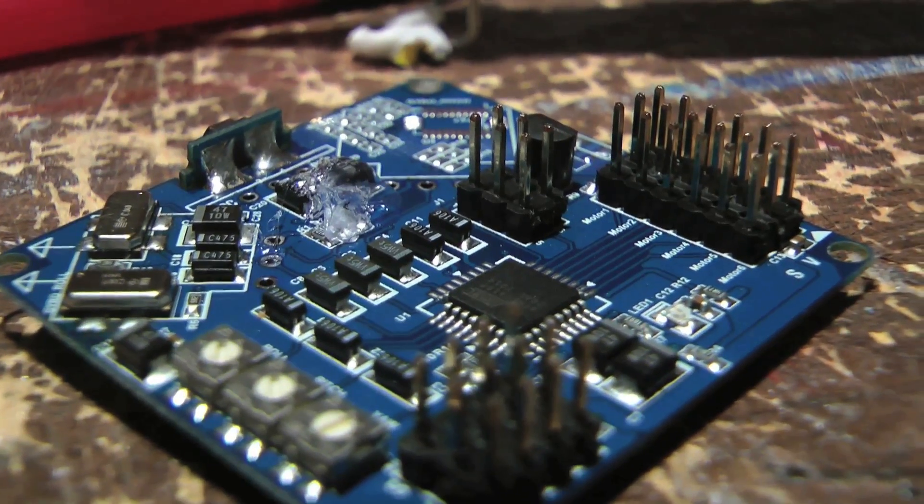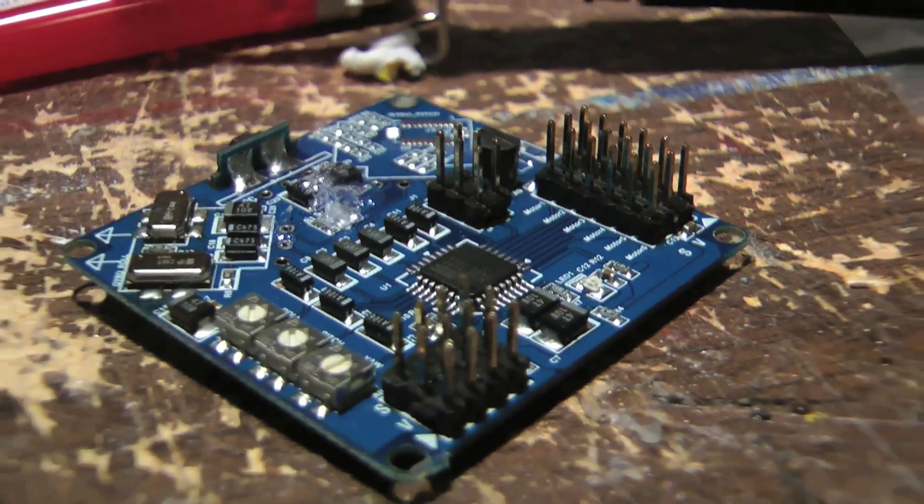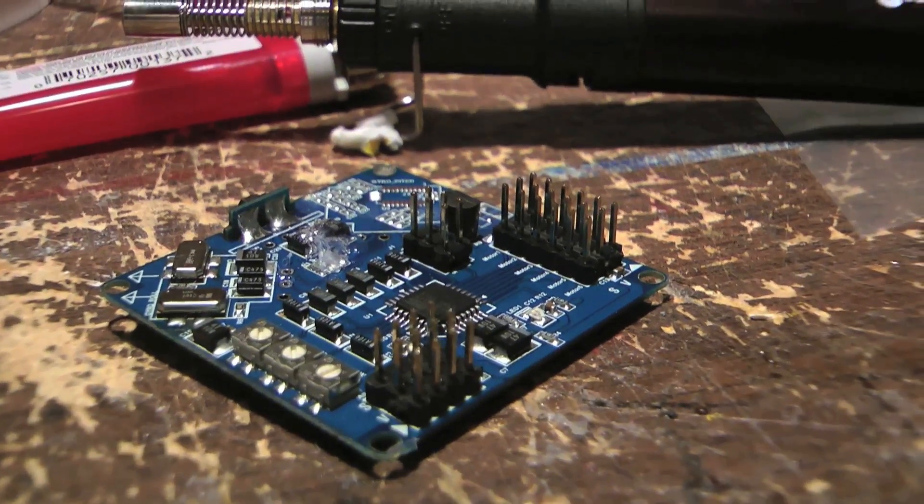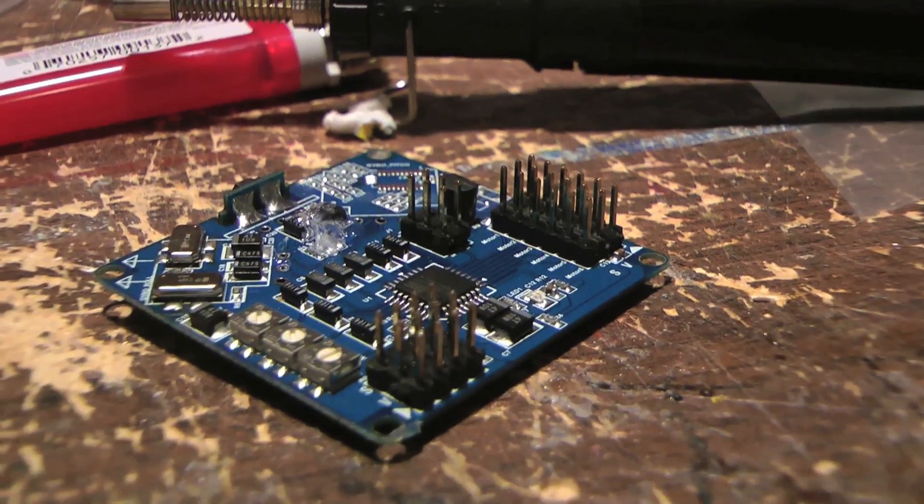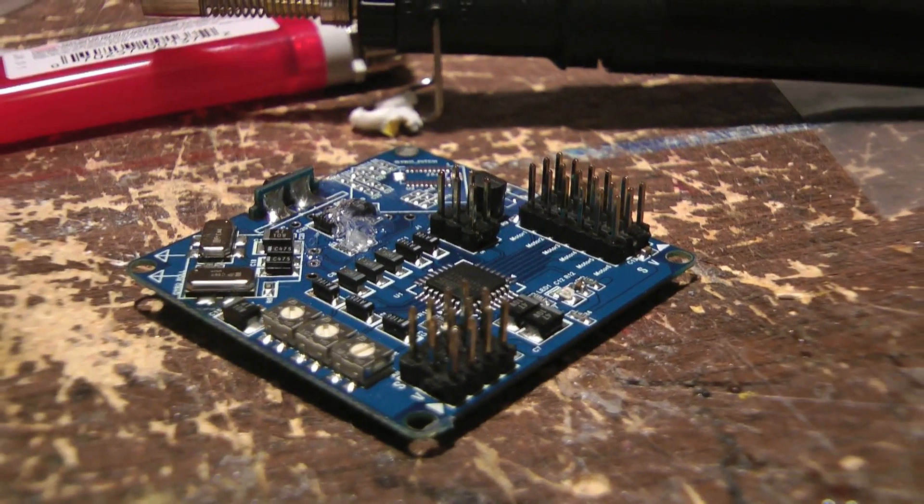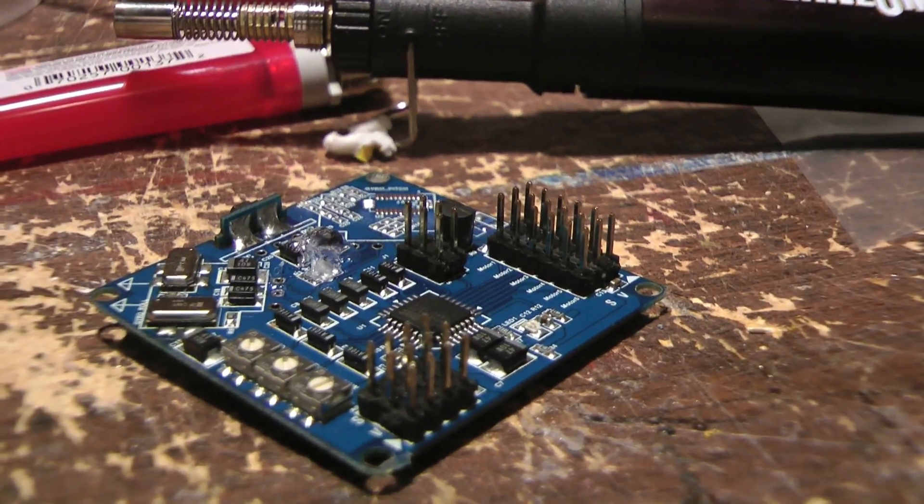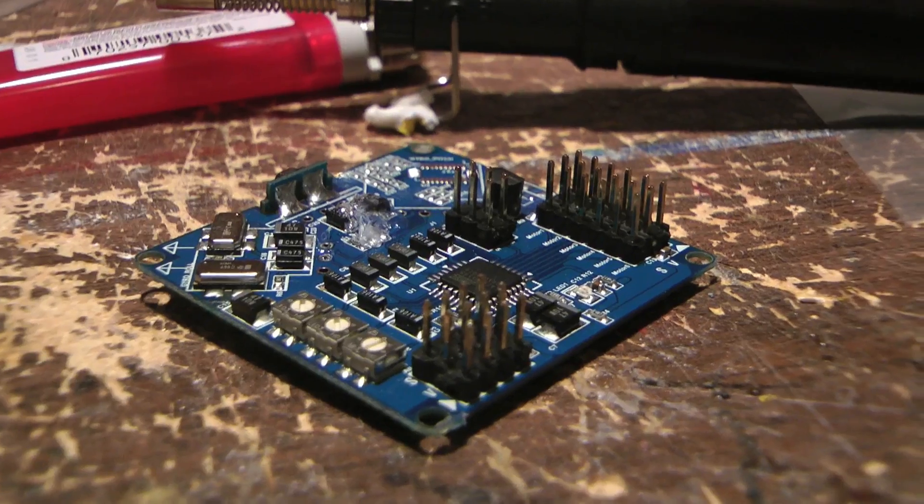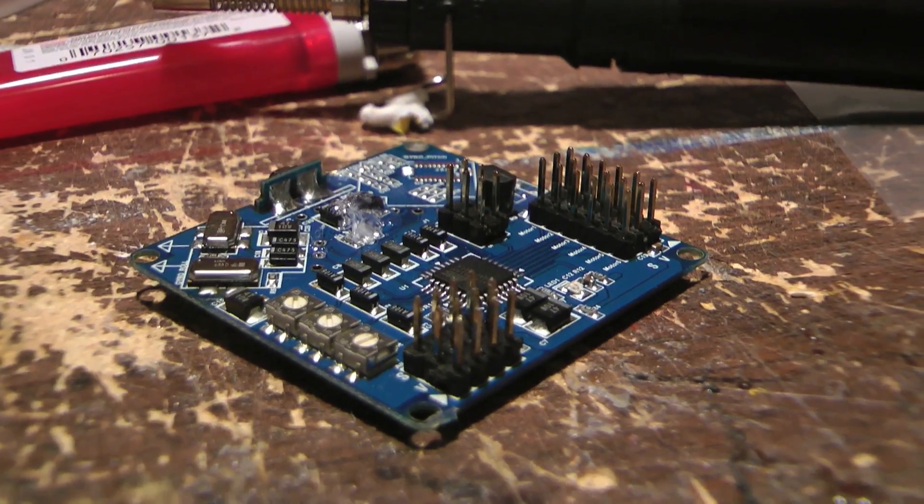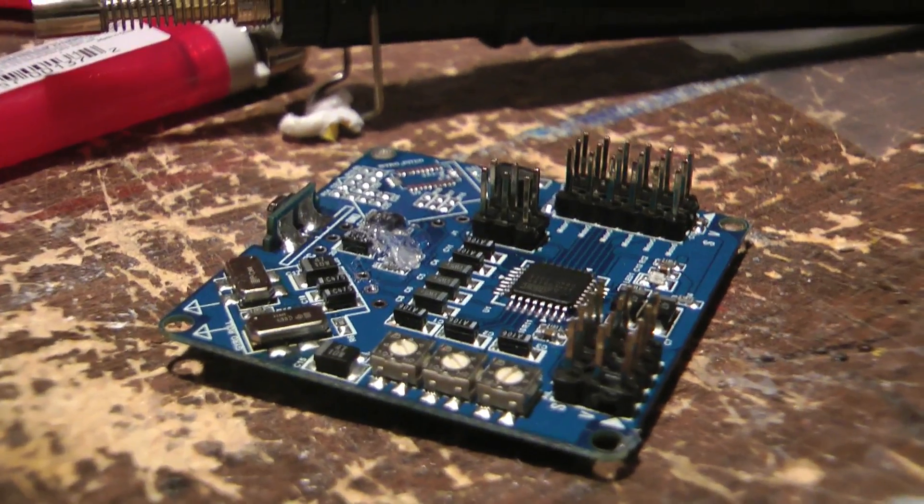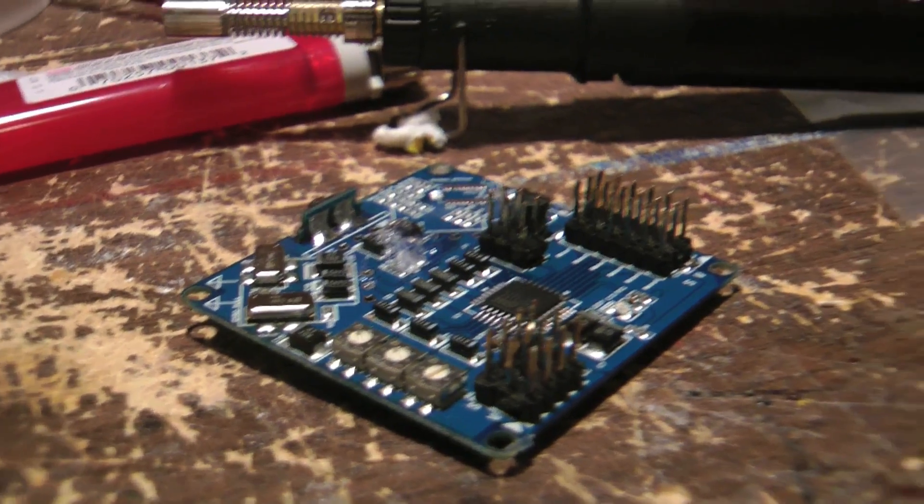So this is the controller board from that little quadcopter, and I'm gonna build a bigger one with bigger motors so it can carry the GoPro and maybe some FPV gear. And I also think I'm gonna put one of those FMA copilot things on it so it stays level with the horizon. I haven't bought any of that stuff yet, but that's the plan.